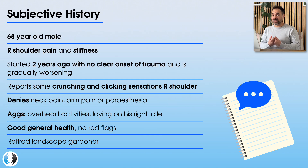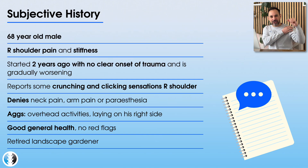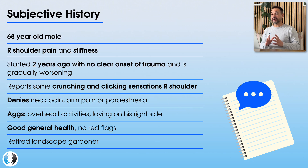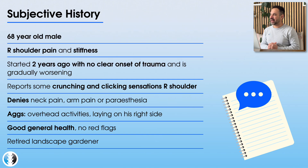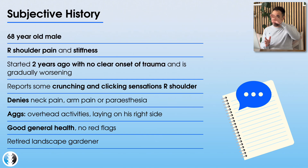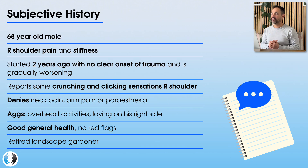They are reporting some additional symptoms, experiencing a crunching or clicking sensation around the shoulder when moving their arm. They report no neck pain, no further arm pain, and no symptoms of pins and needles or numbness into the right hand. Their symptoms are worse with movement of the right shoulder, particularly when trying to reach overhead and when lying on the right side.